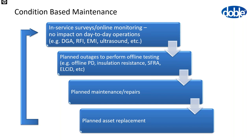Our final step is planned asset replacement. If maintenance and offline testing suggest an asset is on its way out, we can plan for replacement rather than waiting for it to fail in service. Then with a new asset we go back to Level 1. Today's presentation is all about Level 1 — in-service and online monitoring.